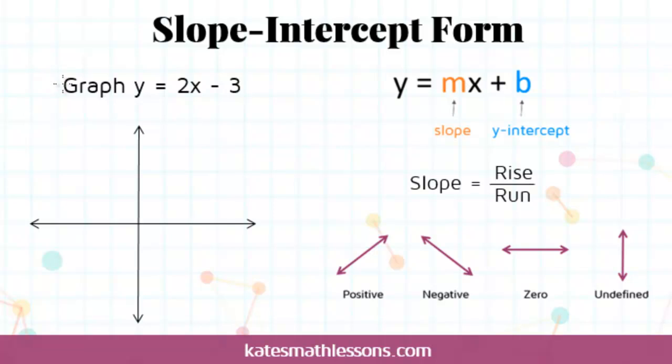In this problem we've been asked to graph the line y equals 2x minus 3. This equation is written in what's called slope-intercept form. Slope-intercept form is right here, this y equals mx plus b. It's when the y is by itself on the left hand side, the term with the x is first on the right hand side, followed by the constant term.